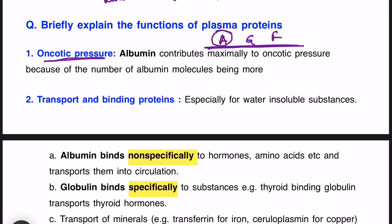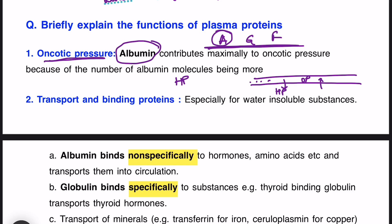In the vessels there are two types of pressure — Starling's forces. Hydrostatic pressure is a push force for movement of fluid outside the capillaries. Oncotic pressure is due to the presence of plasma proteins, mainly albumin, and this is the pull force which brings fluid back into the blood vessel. Oncotic pressure is basically the osmotic pressure exerted by proteins only, not ions.